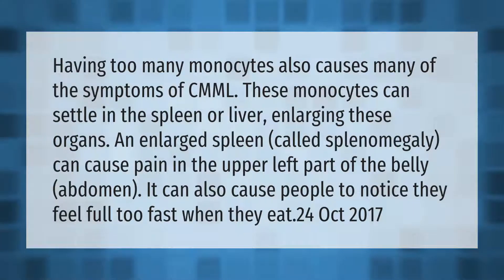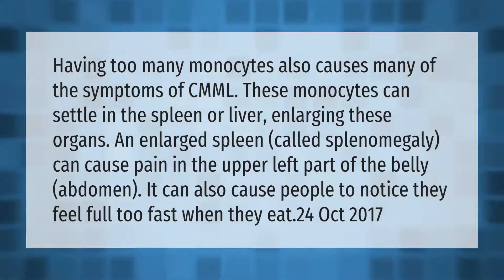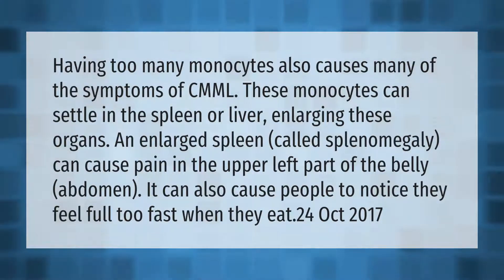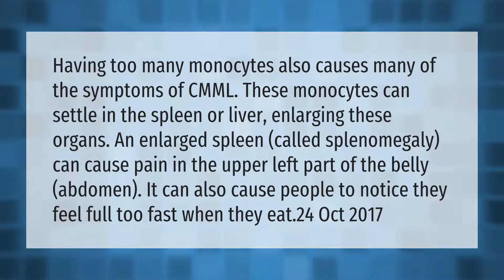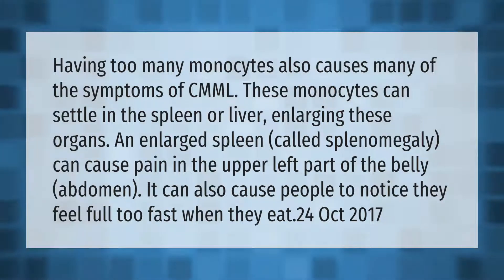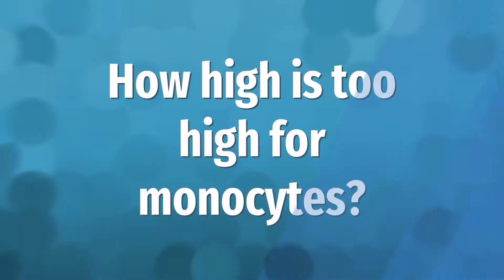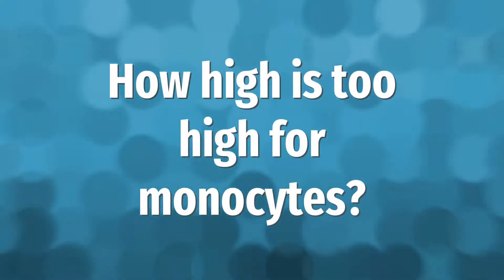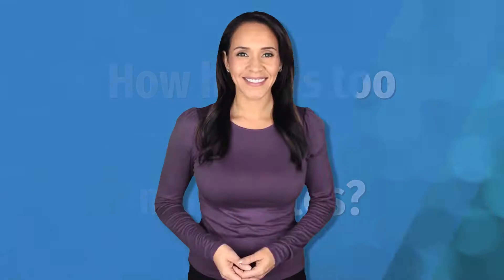Having too many monocytes also causes many of the symptoms of CMML. These monocytes can settle in the spleen or liver, enlarging these organs. An enlarged spleen, called splenomegaly, can cause pain in the upper left part of the abdomen. It can also cause people to notice they feel full too fast when they eat.